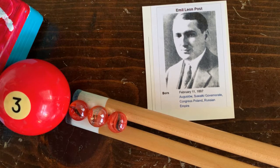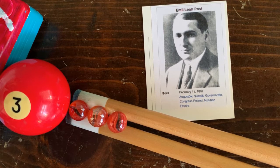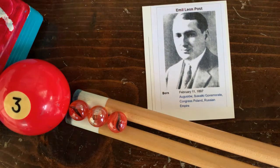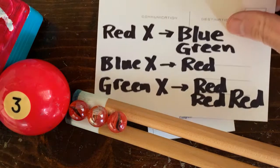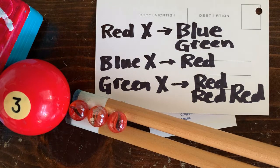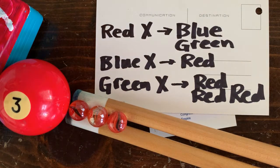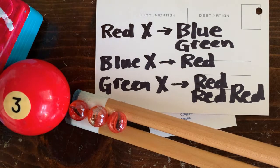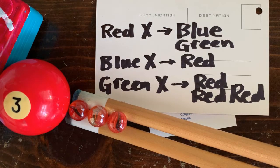You can write any program you want, like this program. It says, replace red x with blue green, replace blue x with red, and replace green x with 3 reds. Even though this programming language is very simple, it's very powerful. And in fact, anything you can program in Python or C++, you can also program in a tag system.